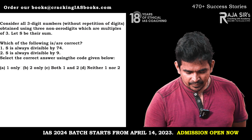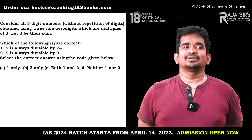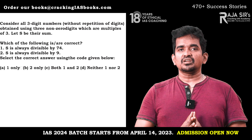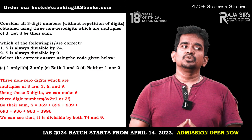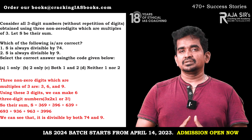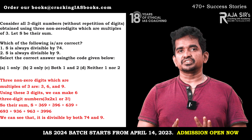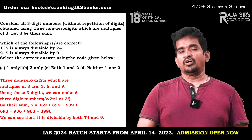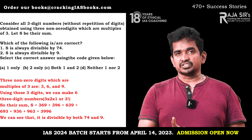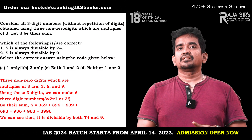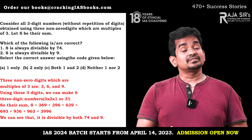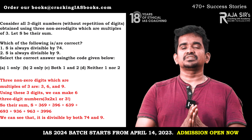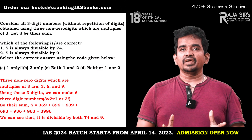Now how to solve this problem. There are two conditions: without repetition of digits, and the digits are non-zero multiples of three. When you say multiples of three and non-zero digits, there are only three possibilities: 3, 6, and 9. Using these three digits, six three-digit numbers can be formed: 369, 396, 639, 693, 936, and 963. That's all.